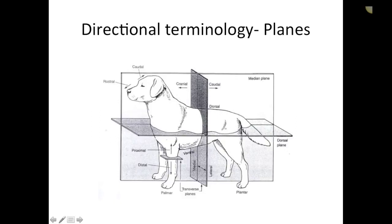The dorsal aspect of the animal runs along the spine — think of the dorsal fin of a dolphin. We also have ways to describe the limbs specifically: proximal means closer to the body, and distal is the aspect of the limbs away from the body. Ventral is toward the floor when an animal is standing, so toward the lower aspect of their abdomen.